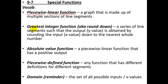One example of a piecewise linear function is called the greatest integer function. This is a general category; this is a specific example. I like to call it the round down function — that's how I remember it. It's a series of line segments such that the output, or y-value, is obtained by rounding the input value down to the nearest whole number. Let me make a little t-table to show you what I mean.